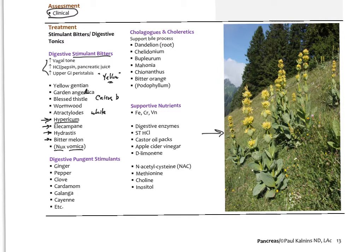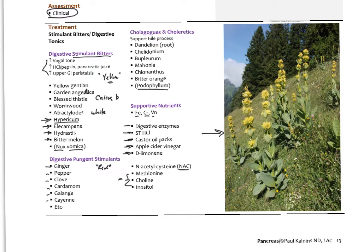Pungent stimulants have more of a red nature and activate circulation and arterial blood flow: ginger, pepper, clove, cardamom, galangal, cayenne, etc. Cholagogues and choleretics increase the synthesis and secretion of bile, including dandelion root, chelidonium, bupleurum, mahonia, Oregon grape, bitter orange, and podophyllin usually in homeopathic doses. Supportive nutrients like chromium and vanadium support blood sugar and pancreatic function. Digestive enzymes, stomach acid, castor oil packs, apple cider vinegar, D-limonene, and N-acetyl cysteine may also be helpful.